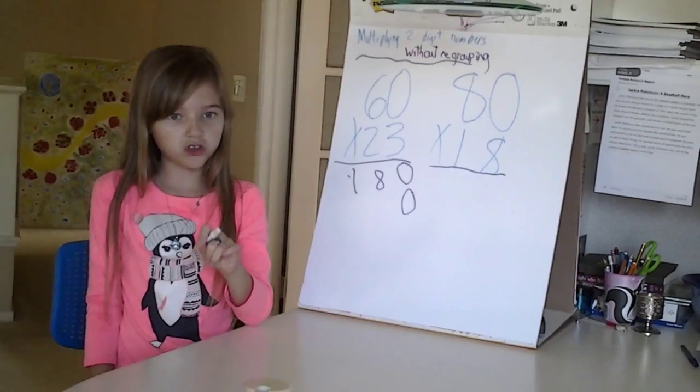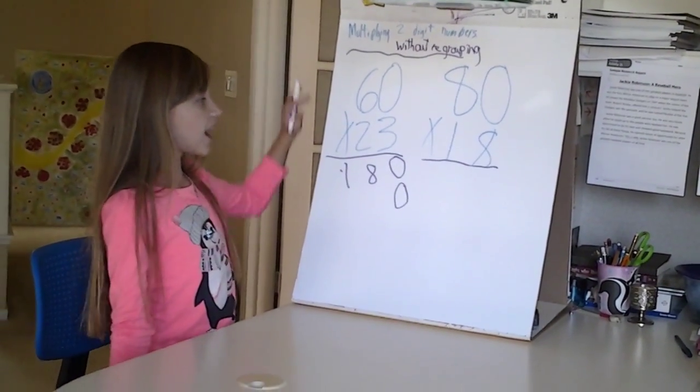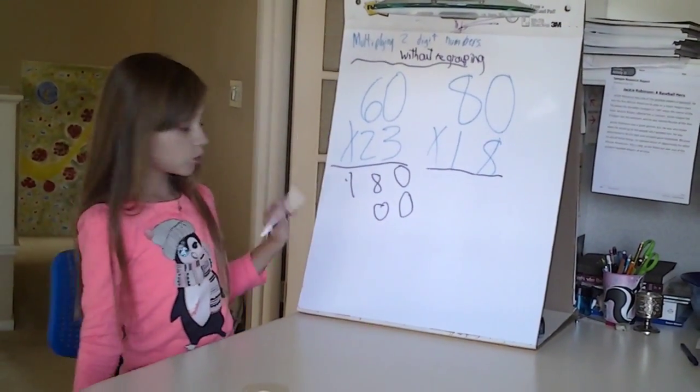Now remember that 0 is important. Then you do 2 times 0, which is 0. Then 6 times 2, which is 12.